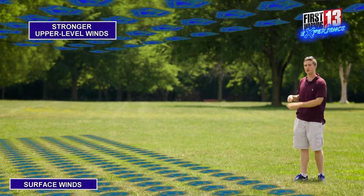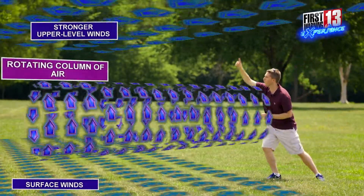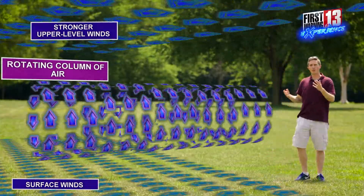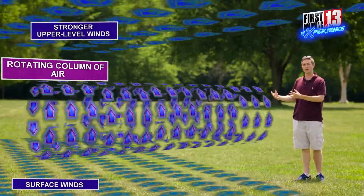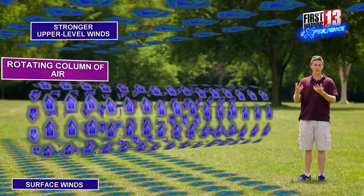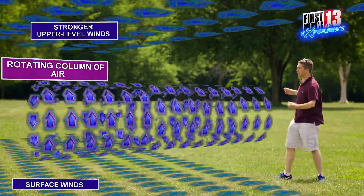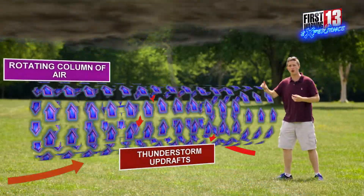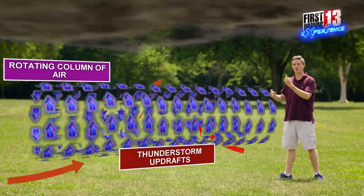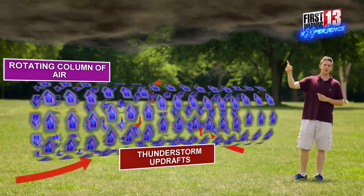The end result in between the two is this large horizontal rotating column of air. What happens as we work our way into the afternoon and the chance for severe thunderstorm development increases is the thunderstorm updraft starts to push that horizontal column of air up and then vertically into the air.